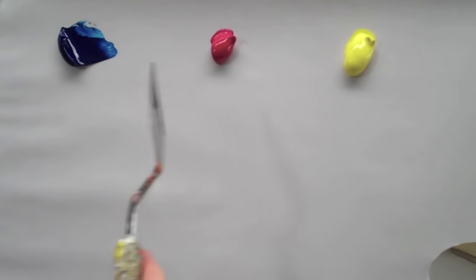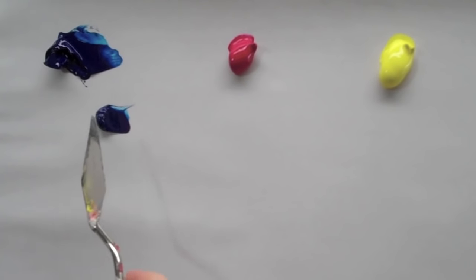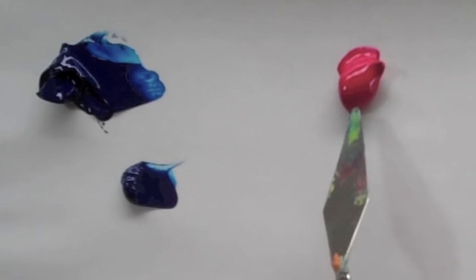You can mix these in any way you want, but I'm going to start by mixing the phthalo blue and quinacridone red first. This is a very strong tinter so we won't need as much.